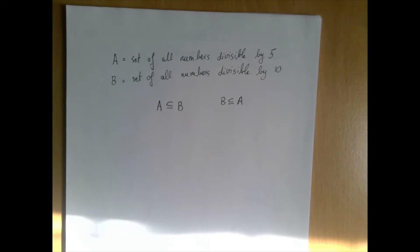So we are given two sets, A and B. A is the set of all numbers divisible by 5. B is the set of all numbers divisible by 10. At this point, by numbers we mean whole numbers.